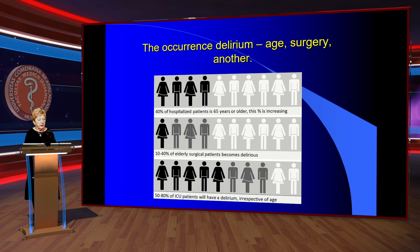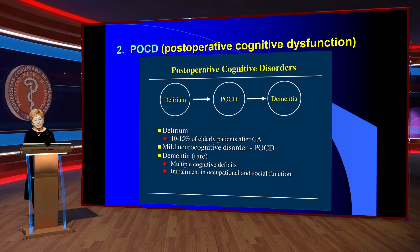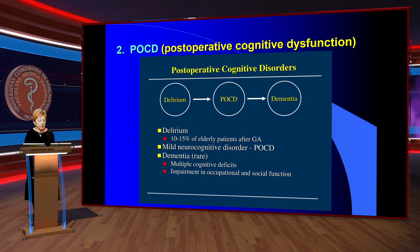Another problem involving brain disturbance is post-operative cognitive dysfunction (POCD). POCD can follow delirium and sometimes progresses to dementia. 15% of elderly patients after general anesthesia develop mild neurocognitive disorders; dementia involves multiple cognitive deficits and impairment of occupational and social function.